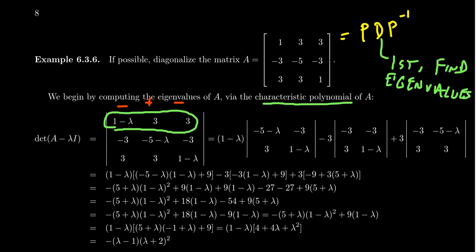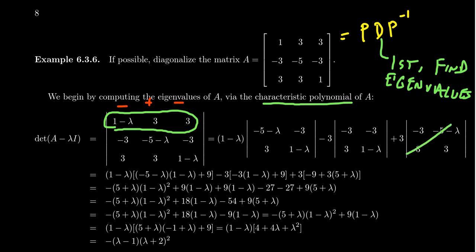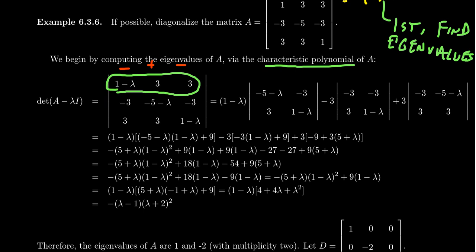These are each two by two minors. We take the product of the diagonals minus the other diagonals. For the first one: (5 - lambda)(1 - lambda) minus 9, all times (1 - lambda). Then negative three out front: the two by two determinant gives negative three times (1 - lambda) minus negative nine, so plus nine. And for the last one: negative nine and negative lambda times three gives three times (5 + lambda) due to a double negative. This gives us what happens when we expand all the determinants.